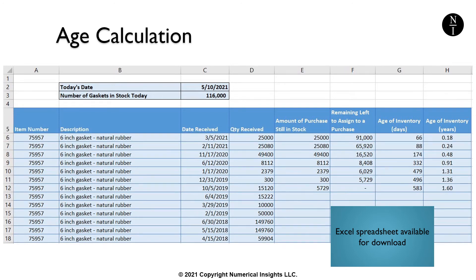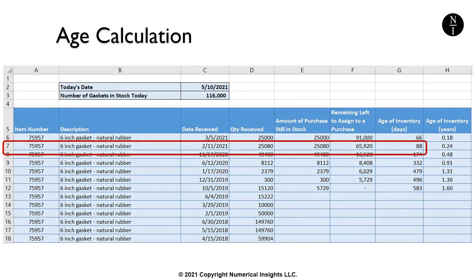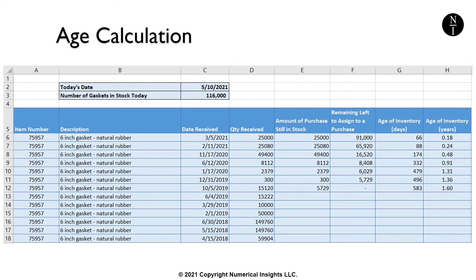So let's keep moving down to the next purchase date. On February 11, 2021, we received 25,080 gaskets, so we have 25,080 gaskets that are 88 days old. This leaves 65,920 gaskets where we have not yet assigned an age. We continue down the table until all 116,000 gaskets have been assigned an age.